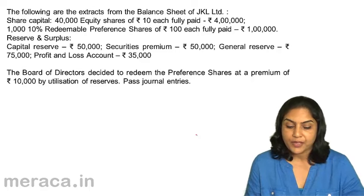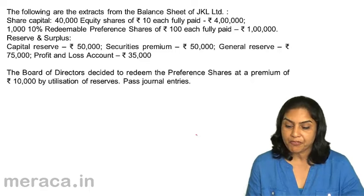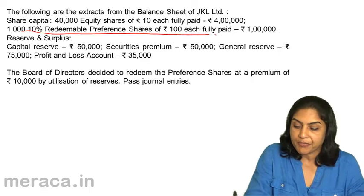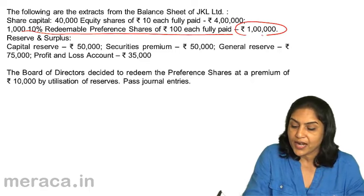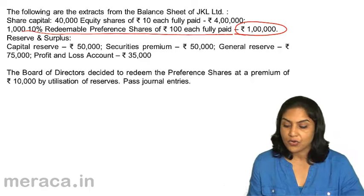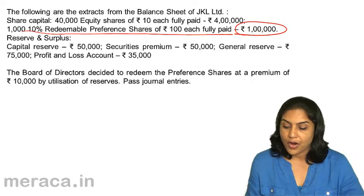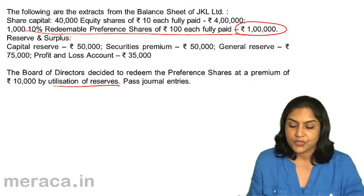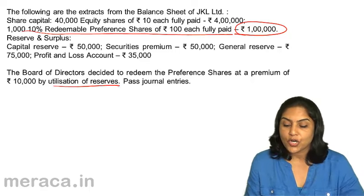The board of directors has decided to redeem the preference shares — the 1,000 redeemable preference shares of ₹100 each, so ₹1 lakh has to be redeemed — at a premium of ₹10,000, by utilization of reserves. So what would be the journal entries?